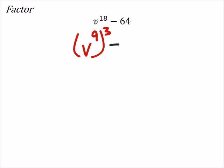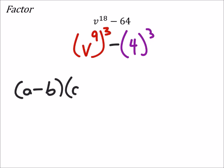And then this is minus 4 cubed. Alright, so the difference of cubes gave us something like this, right? A minus B. And then we got A squared plus AB plus B squared.